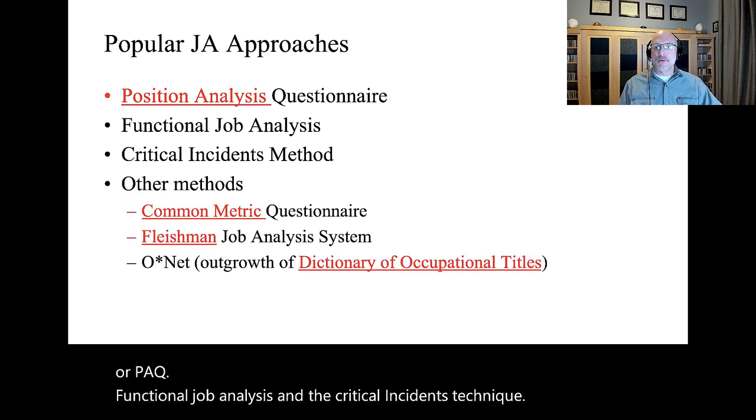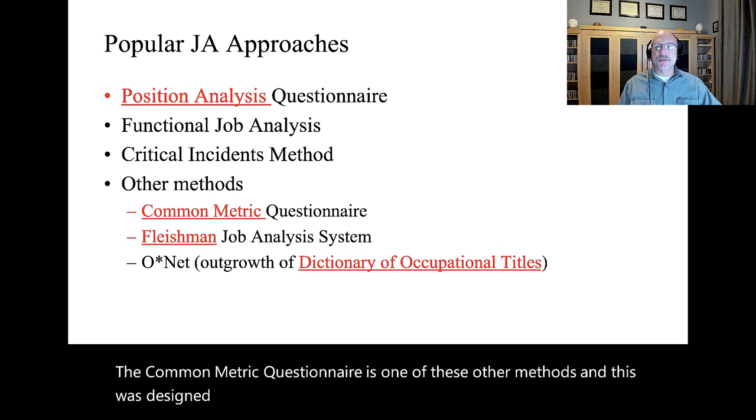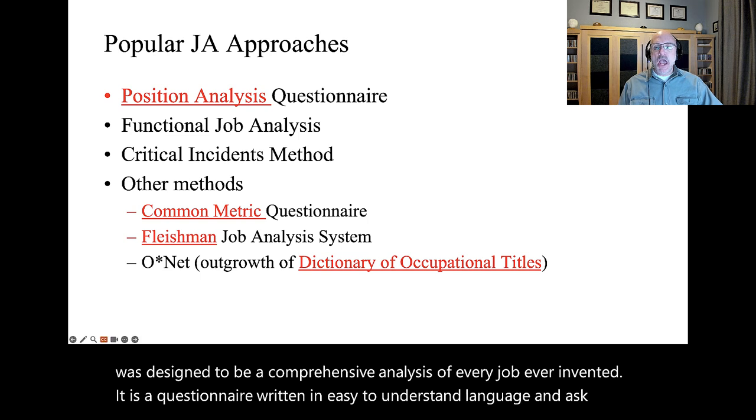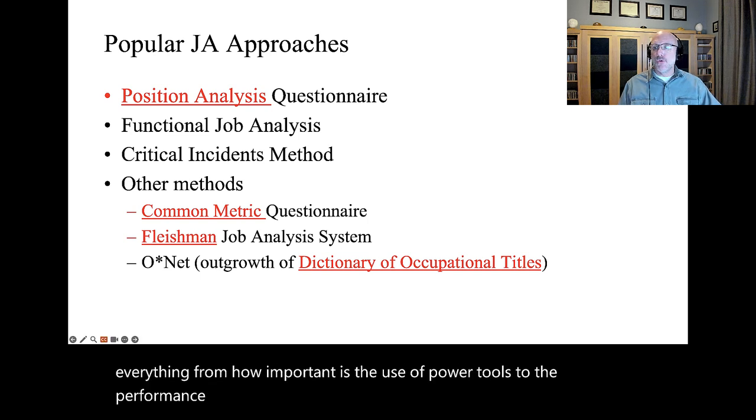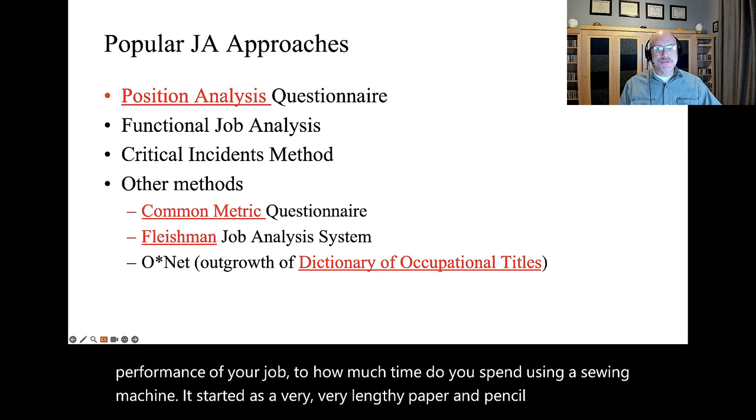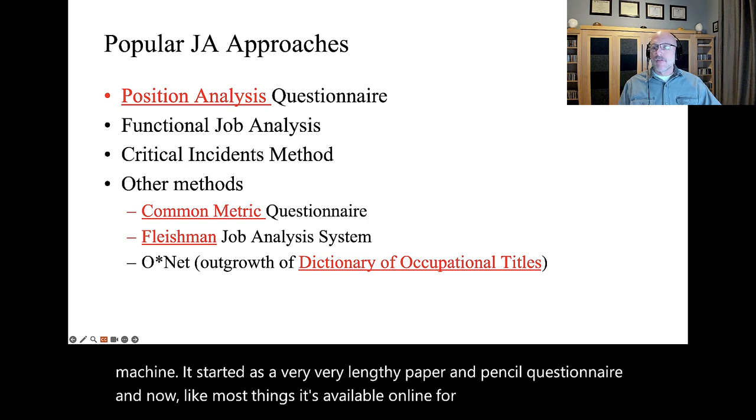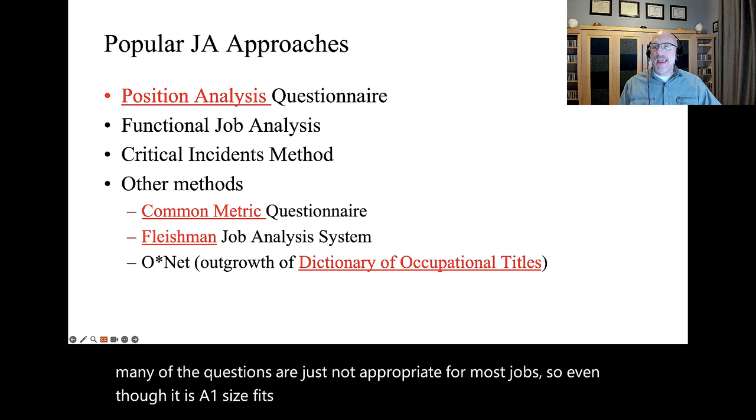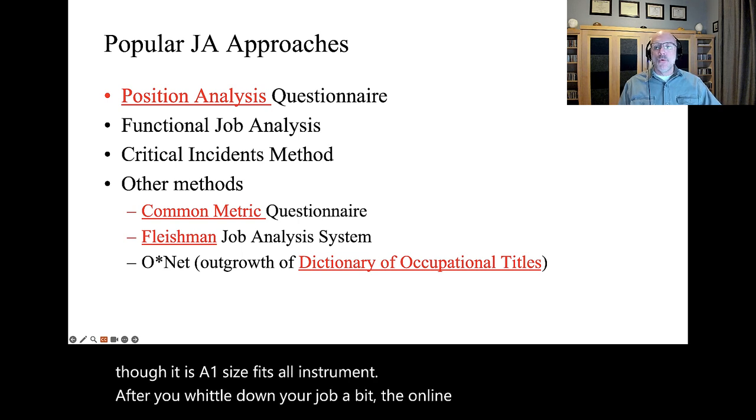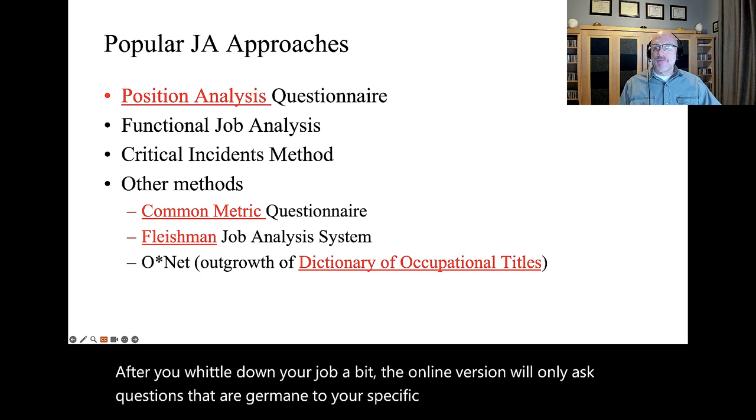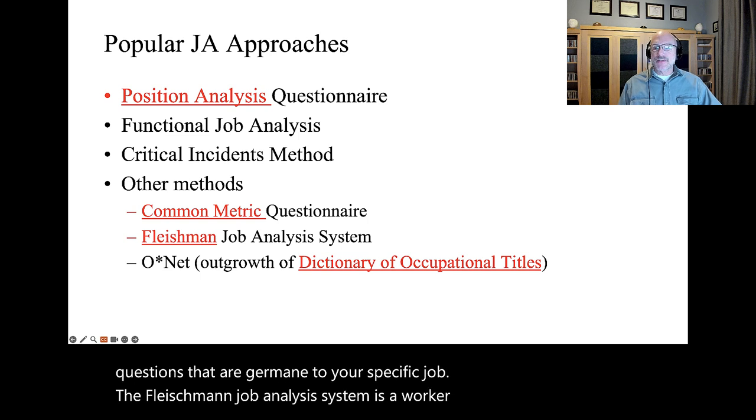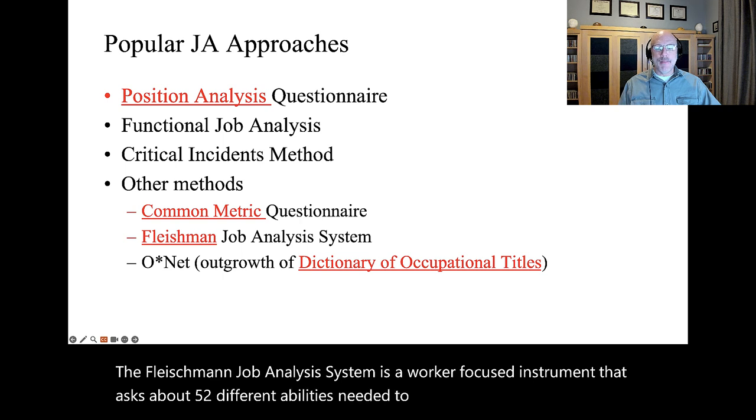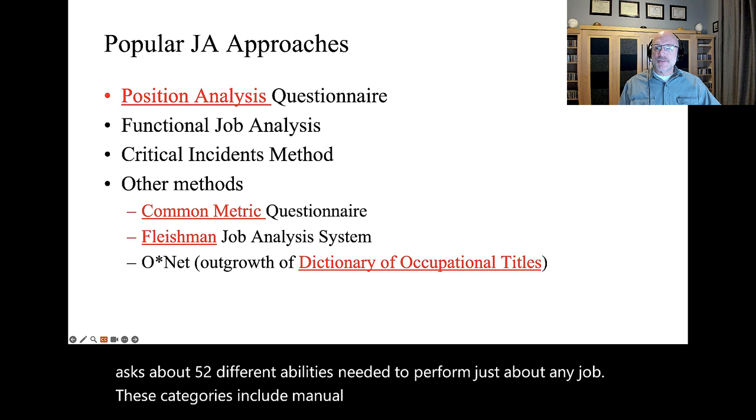The Common Metric Questionnaire is one of these other methods, designed to be a comprehensive analysis of every job ever invented. It is a questionnaire written in easy-to-understand language and asks everything from how important is the use of power tools to the performance of your job to how much time do you spend using a sewing machine. It started as a very lengthy paper and pencil questionnaire, and now it's available online for a fee. Many of the questions are not appropriate for most jobs, so even though it is a one-size-fits-all instrument, the online version will only ask questions that are germane to your specific job.